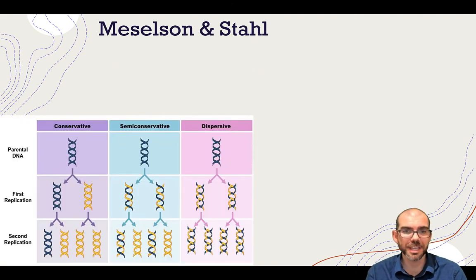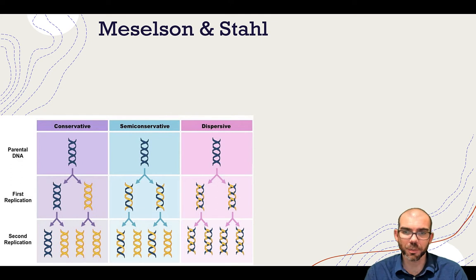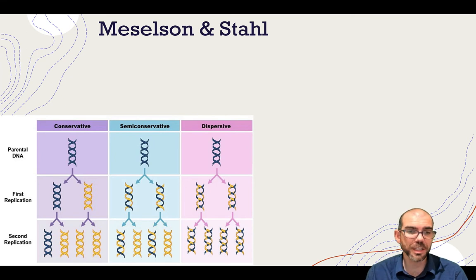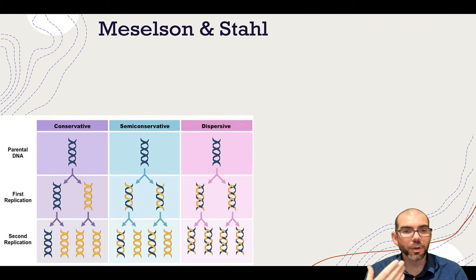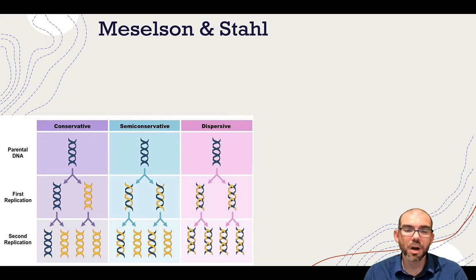A reminder from the discovery of DNA: the work of Meselson and Stahl confirmed one of the three popular theoretical models on how DNA replicates. One model was that DNA replication is conservative — that the original parent strand remains the same and all replicated DNA is made out of new material. Or the semi-conservative model, where the parent strand is split and conserved with one old strand and one new. Or the dispersive model, where DNA is sporadically broken and rebuilt.